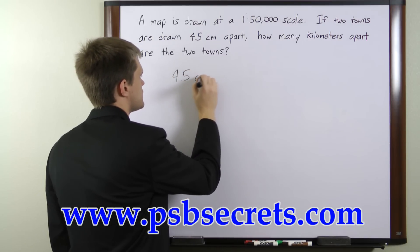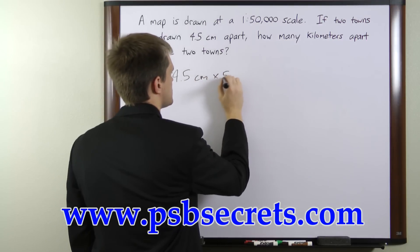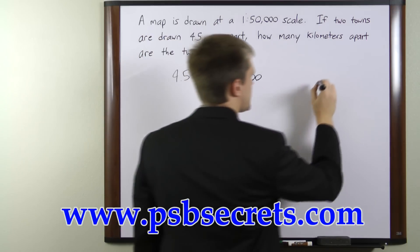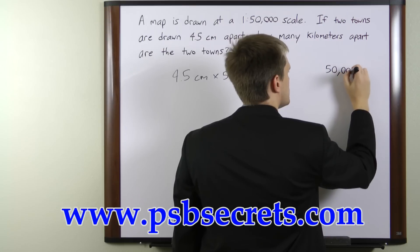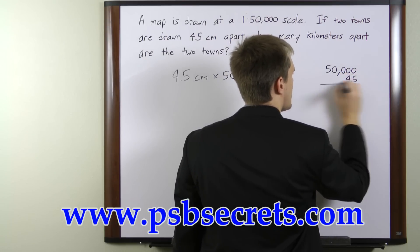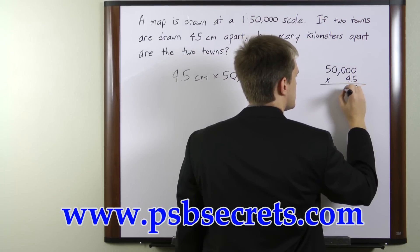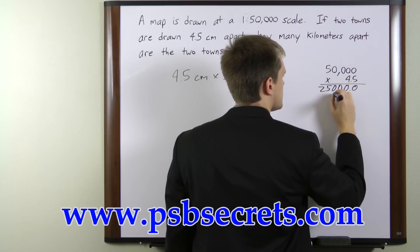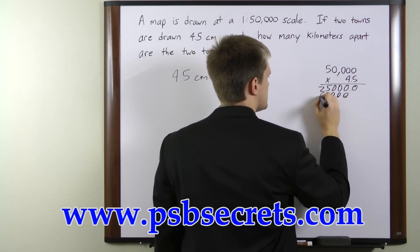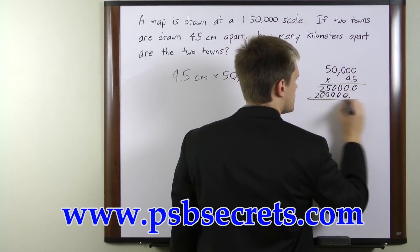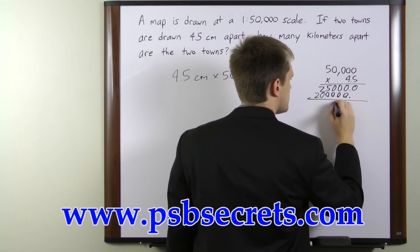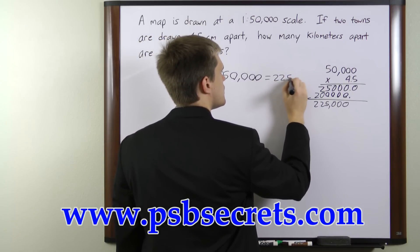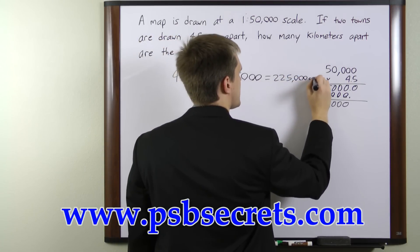So 4.5 centimeters times 50,000. Let's go ahead and multiply this out. 50,000 times 4.5: 5 times 5 is 25, and 4 times 5 is 20. If we add these up, we get 225,000 centimeters.